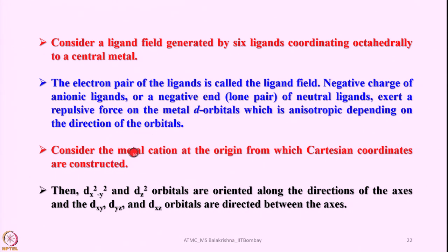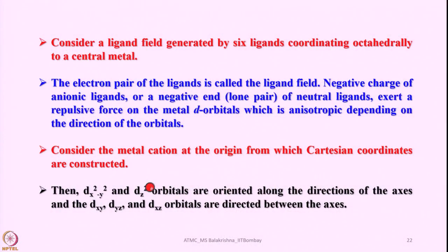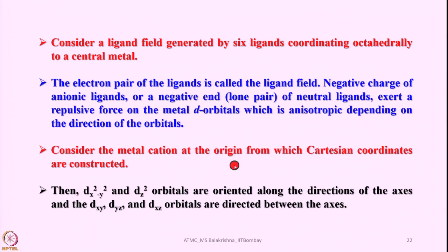Consider the metal cation at the origin of a Cartesian coordinate system. Place the metal atom at the origin, then place all 5 d-orbitals at the origin and analyze their relative orientations. When 6 ligands approach in octahedral fashion, the direction of approach of the ligands coincides with the ±x, ±y, and ±z directions. The dx²−y² and dz² orbitals are oriented along these axes — dx²−y² along x and y, and dz² along the z-axis.